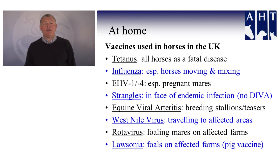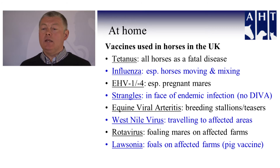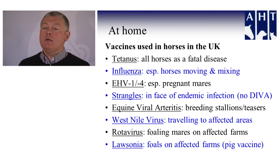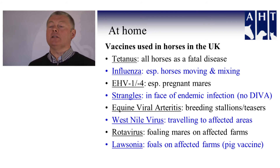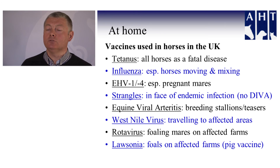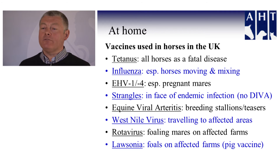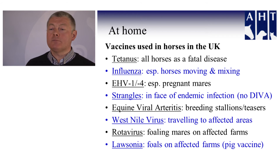Looking at vaccines — we have eight diseases for which vaccines are available for horses in the UK. The first is tetanus, a fatal disease for which all horses should be considered. Influenza is particularly important for horses that are moving, mixing, and going to events. Some events such as racing have mandatory vaccination policies that must be followed before entry into racehorse stables. But it's good practice even if events don't have compulsory policies to take that responsibility yourself and vaccinate your horses, to stop animals that have attended events from bringing infection back.